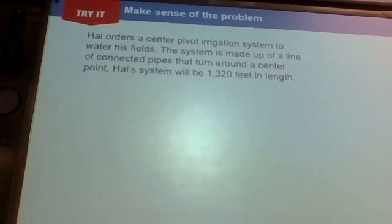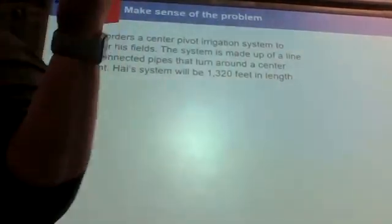Yeah, how they water their crops. Yep, so Hal orders a center pivot irrigation system to water his fields. The system is made up of a line of connected pipes that turn around the center point. Hal's system will be 1,320 feet in length. So the first question I have for you is this: what's this problem talking about?